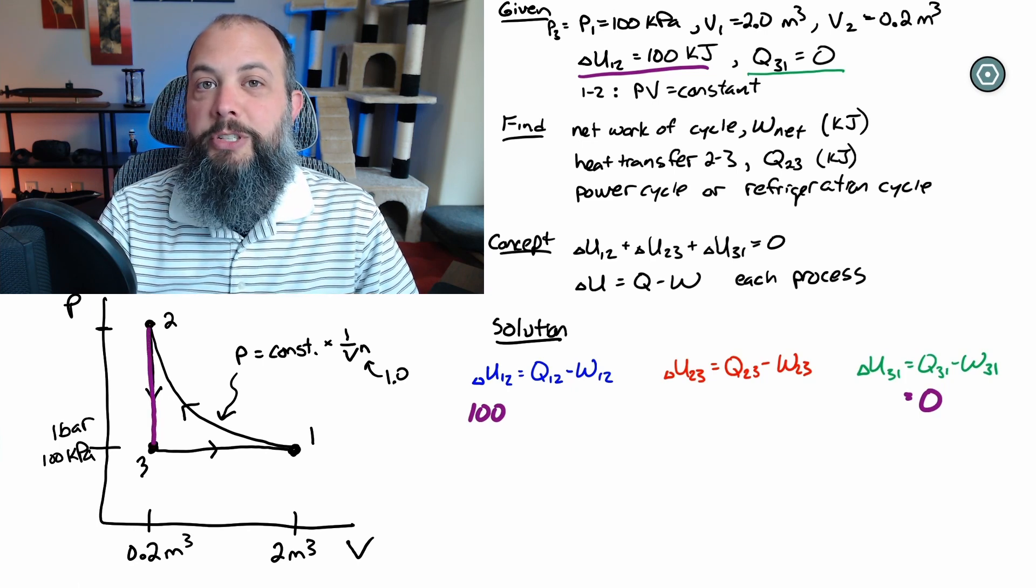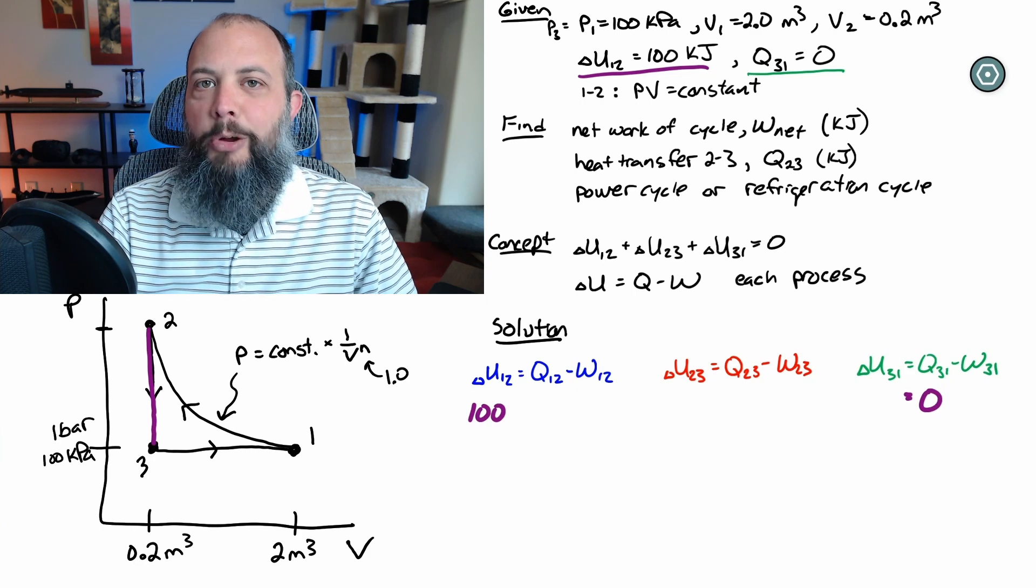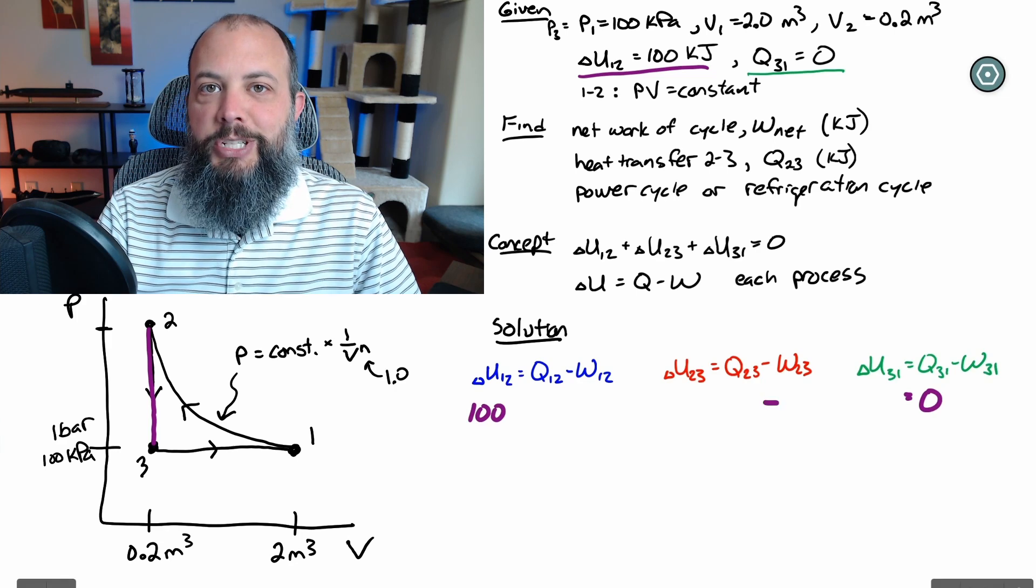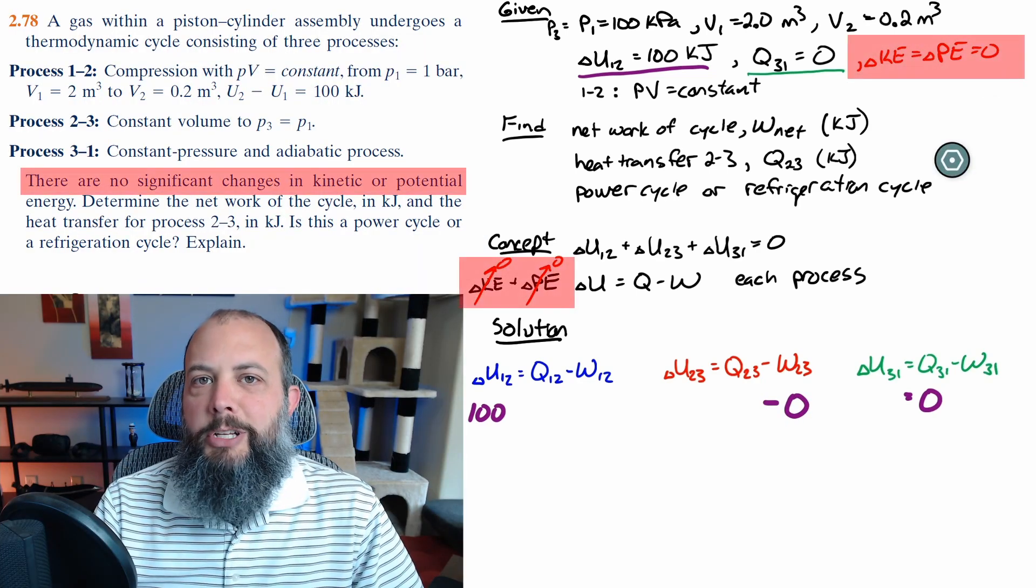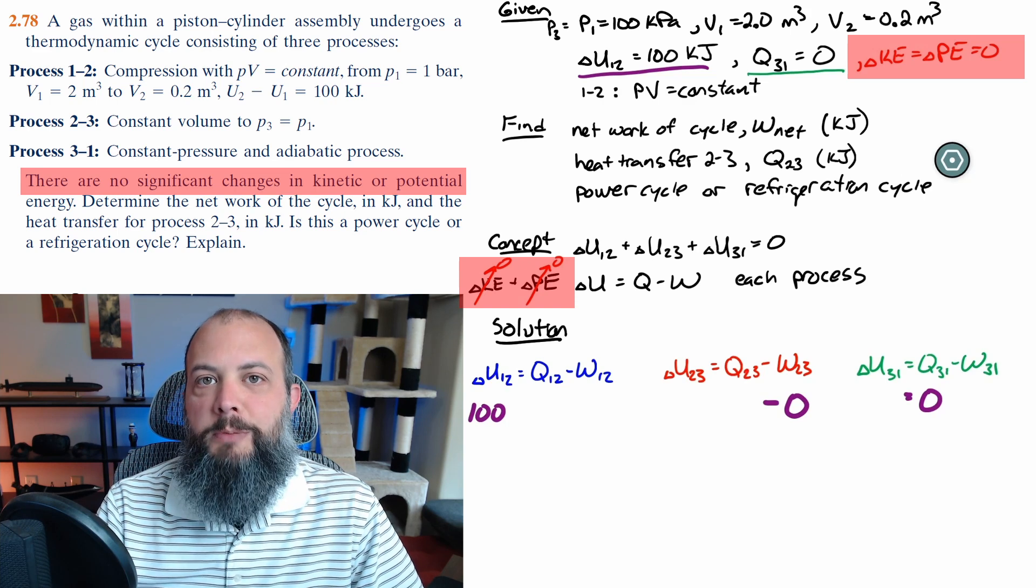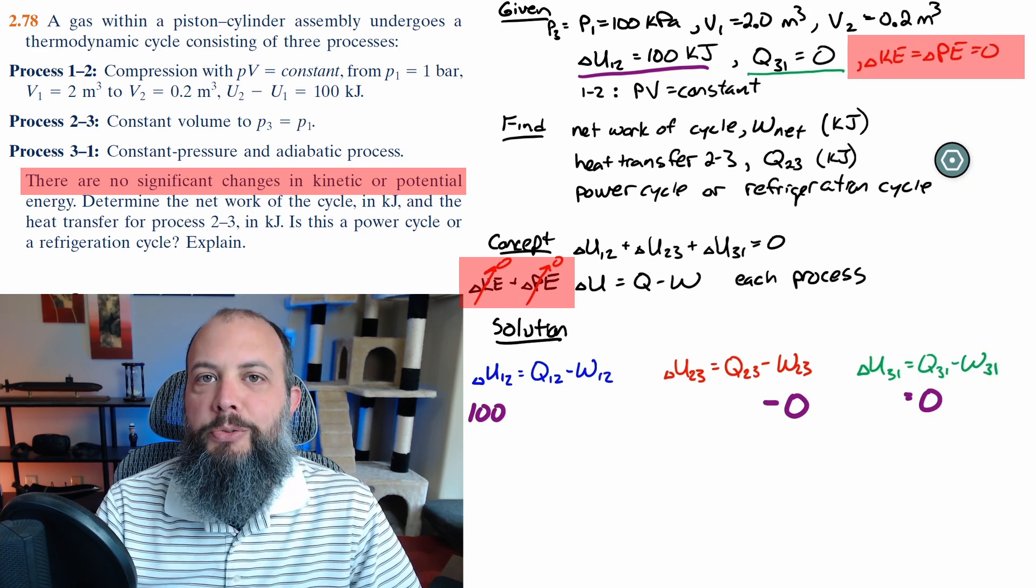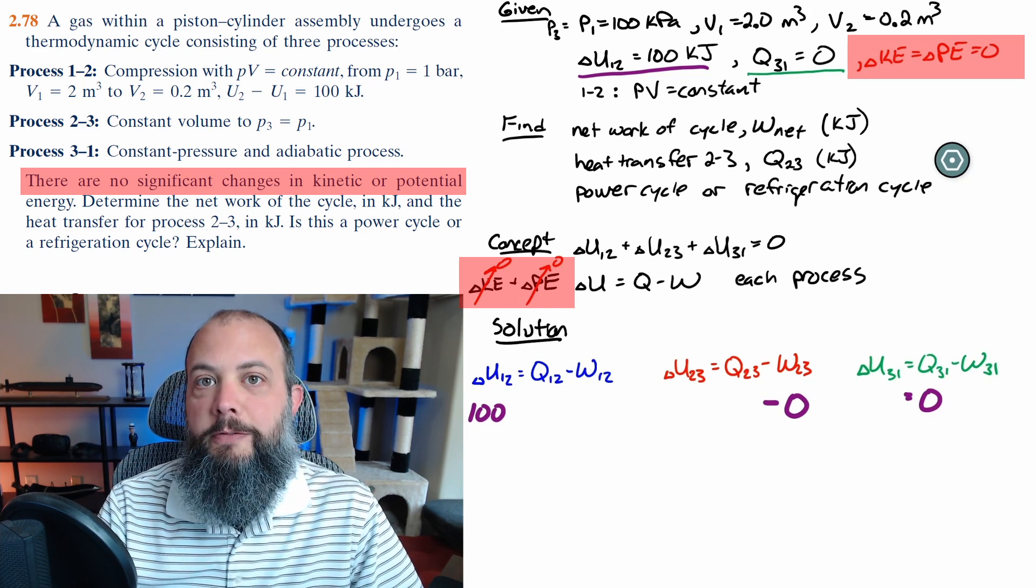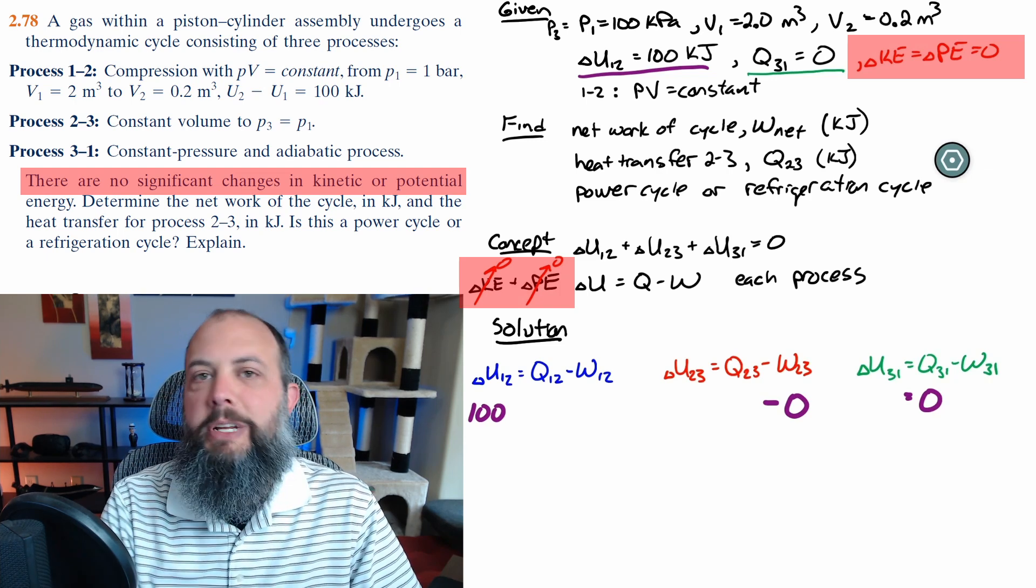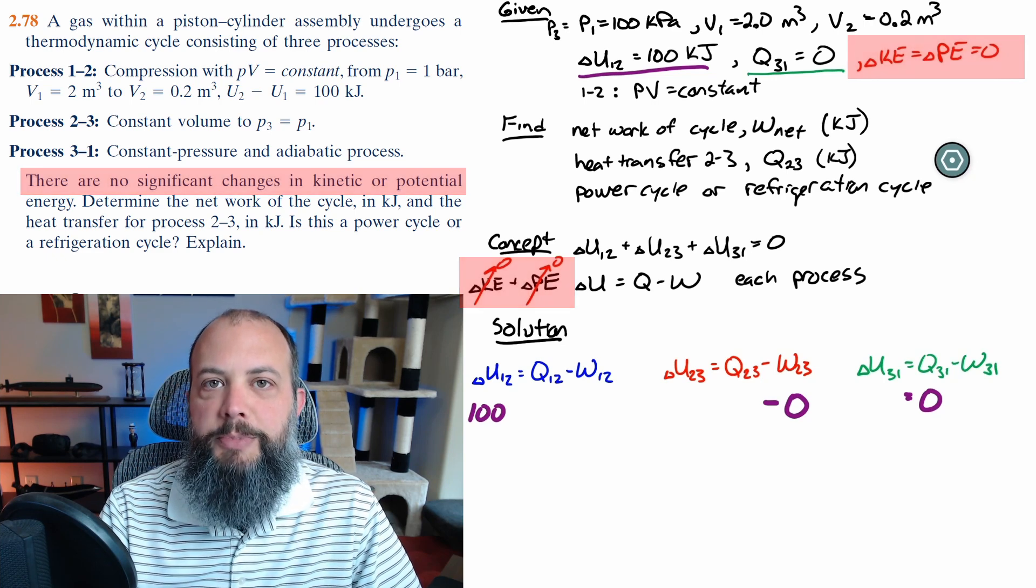The work terms are all going to come from the PV diagram and the easiest one is going to be to start from two to three which is a vertical line. Work is the area under the curve for a PV diagram so since there's no area under a vertical line that term is going to be zero and I forgot to write down one given at the beginning that kinetic and potential energy can be ignored as zero for this problem so that's why I added that up to the given and also in my concept I cross those terms off as zero which justifies why internal energy by itself is equal to heat minus work and those two can be ignored from the problem statement.